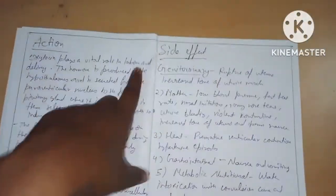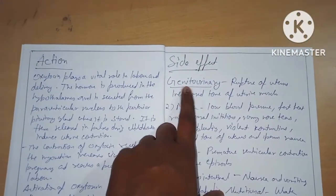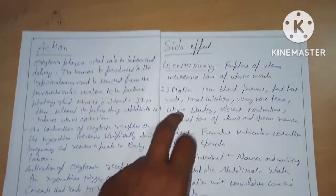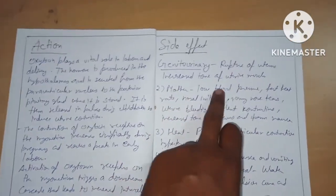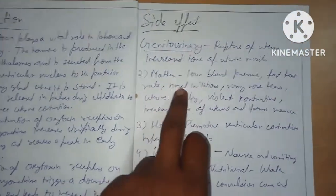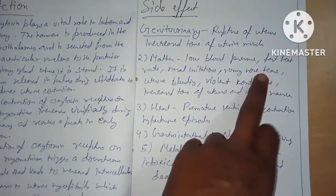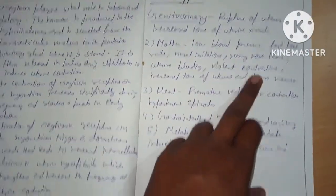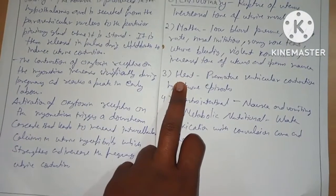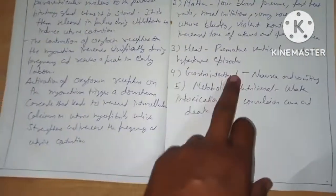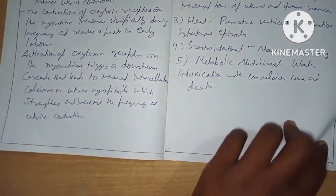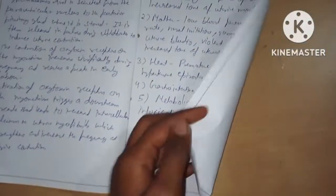Next are side effects. Genitourinary: rupture of the uterus, increased tone of the uterus, uterine muscle spasm. Cardiovascular: low blood pressure, fast heartbeat. Other effects include nasal irritation, nasal tearing, uterine bleeding, violent contractions, nausea, premature ventricular contractions, nausea and vomiting, and metabolic/nutritional effects such as water intoxication with convulsions and death.